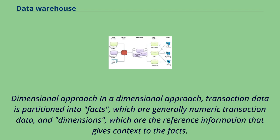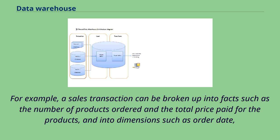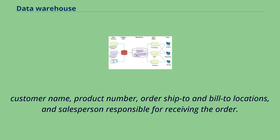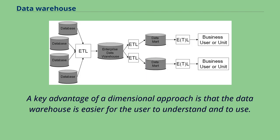In a dimensional approach, transaction data is partitioned into facts — which are generally numeric transaction data — and dimensions, which are the reference information that gives context to the facts. For example, a sales transaction can be broken up into facts such as the number of products ordered and the total price paid, and into dimensions such as order date, customer name, product number, order ship-to and bill-to locations, and salesperson responsible for receiving the order. A key advantage of a dimensional approach is that the data warehouse is easier for the user to understand and to use, and retrieval of data tends to operate very quickly.